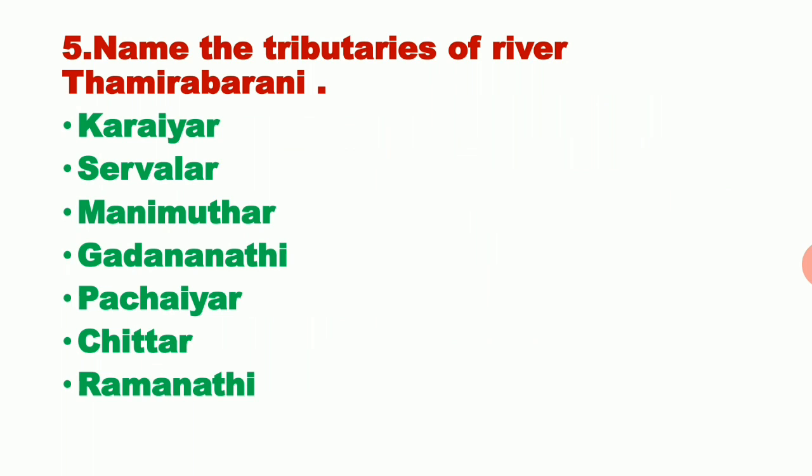Next question: Name the tributaries of river Tamirabarani. The river Tamirabarani flows through Tirunelveli district. It has many tributaries: Karayar, Servalar, Manimuthar, Gaadnadhi, Pachayar, Chittar, and Ramanadhi. These are the tributaries of the Tamirabarani river.